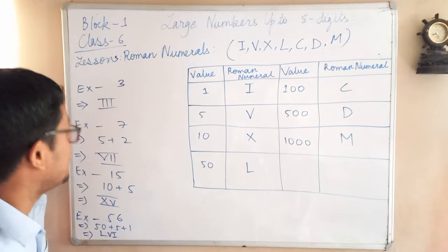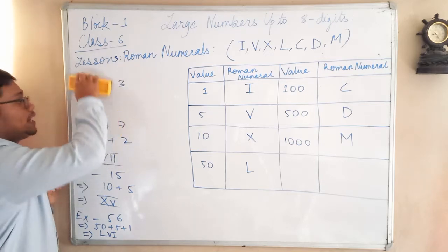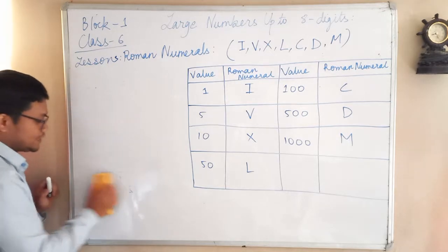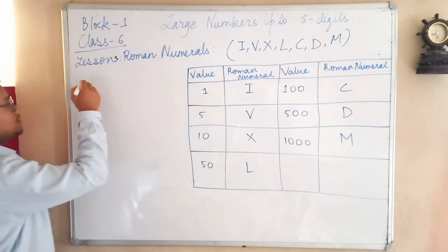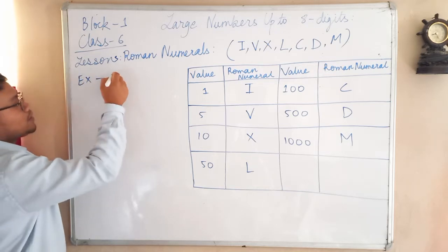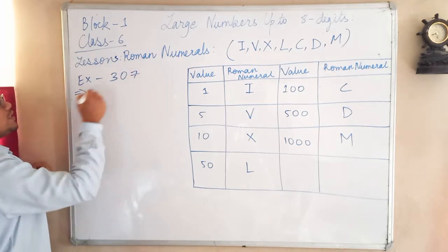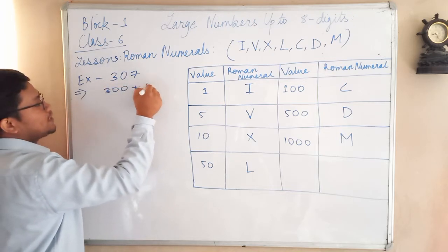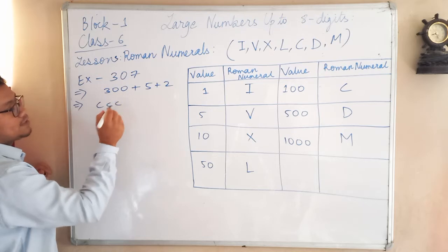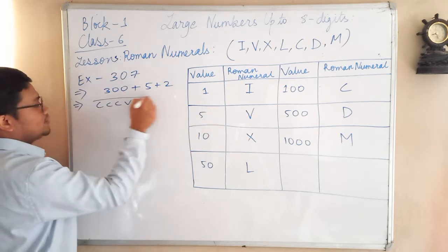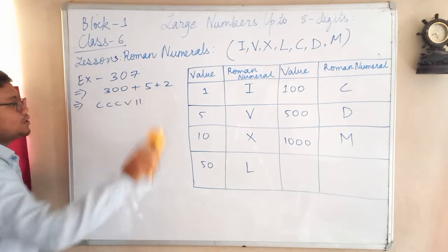I will pause for some time so you can copy this. Now let me give you more examples with three-digit numbers. If it is 307 — 307 is made of 300 plus 5 plus 2. Three hundred means three times C, so CCC; five is V; and two is II. So 307 is written as CCCVII.